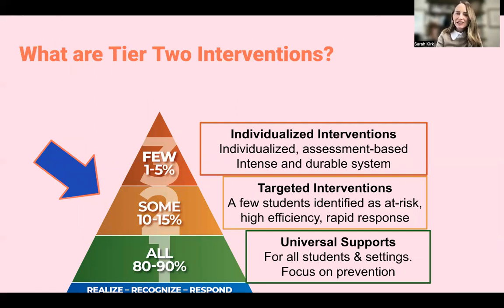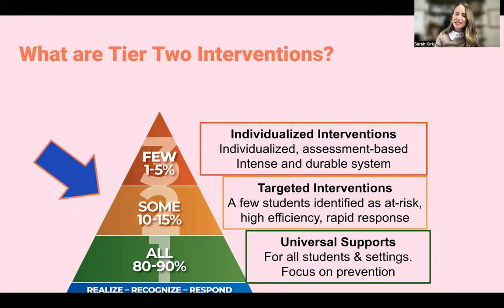Where we're focusing today are those targeted Tier 2 interventions. I often get asked how many students should be receiving Tier 2 interventions. As the triangle indicates, we like to say somewhere between 10 and 15%, though that number can really fluctuate — especially now, some students are coming to us with more needs than ever. The idea is that the vast majority of students are getting universal supports focused on prevention and not needing targeted or individualized interventions.